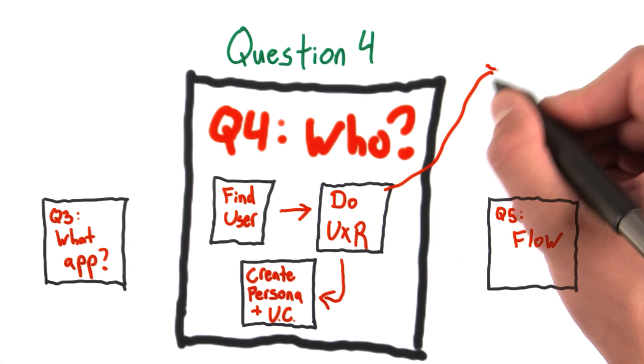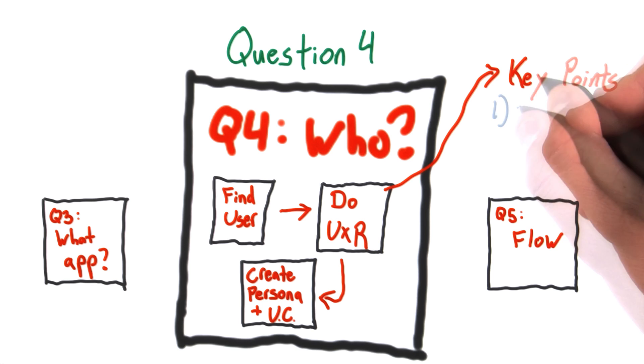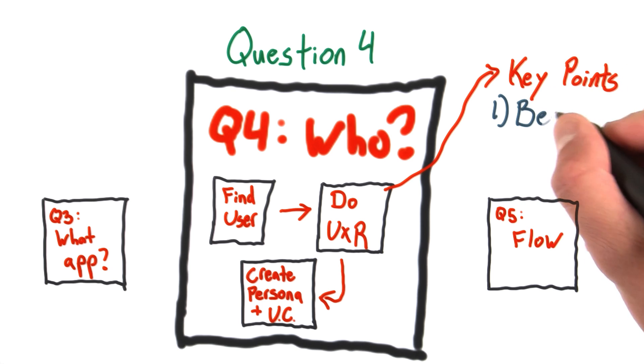Some really key points when you're thinking about user research. First, be quiet. And by that, I mean the other person should be doing most of the talking. Try not to interrupt and definitely don't ever tell them they're wrong.